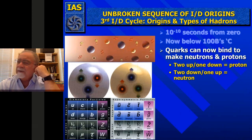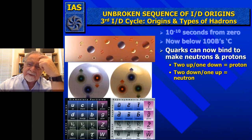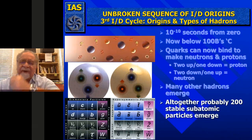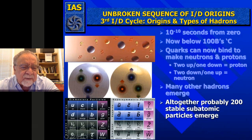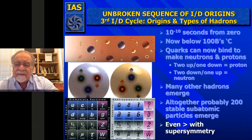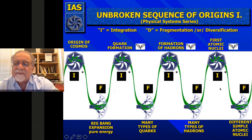If you get two up quarks and one down quark, you get a proton. If you get two down and one up, you get a neutron. Those become the nucleons, called hadrons. A whole family of hadrons emerges. After integration due to cooling, you get this family of elementary particles and their antiparticles—16 in each case. There are probably now 200 stable subatomic particles that begin to emerge, even more when you talk about supersymmetry. So you've now gotten integration into larger complexes, followed immediately by diversification into different sets for the formation of hadrons.